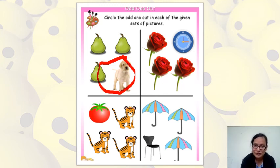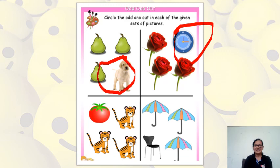In the second picture, you can see there are three roses and one clock. Roses are flowers, but clock is not a flower. So we are going to circle it. And similarly, you can do others. Thank you.